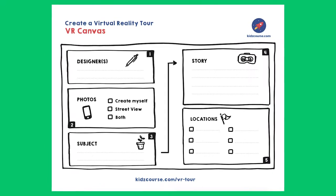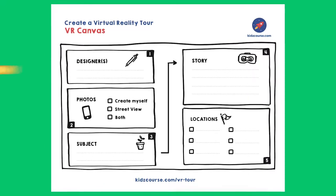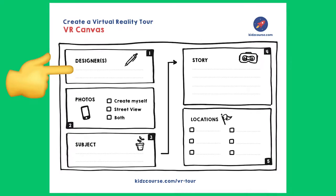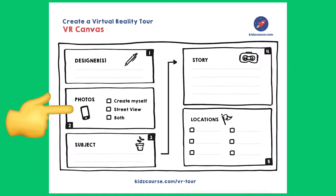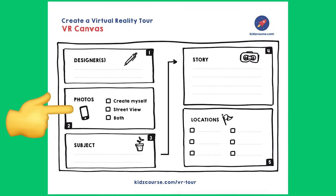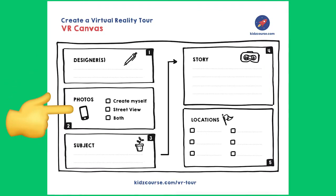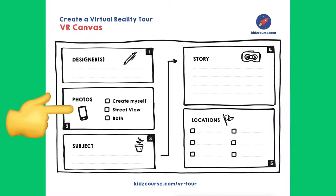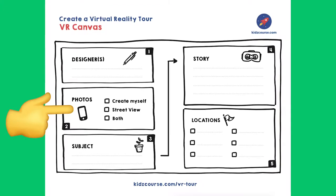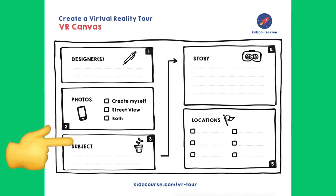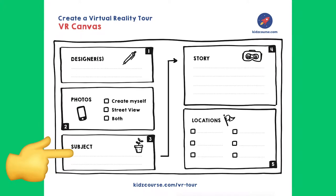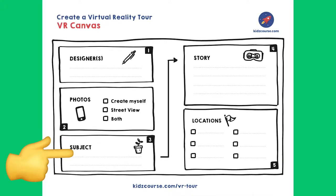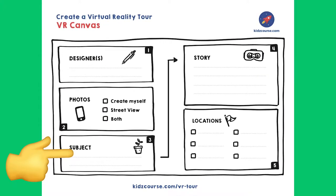On the left-hand side, you start with number one: fill out your name. Number two: are you going to take the pictures yourself, or are you going to get them from Google Streetview? Or both, of course. Number three: decide what you want your tour to be about — the subject of your tour. For example: